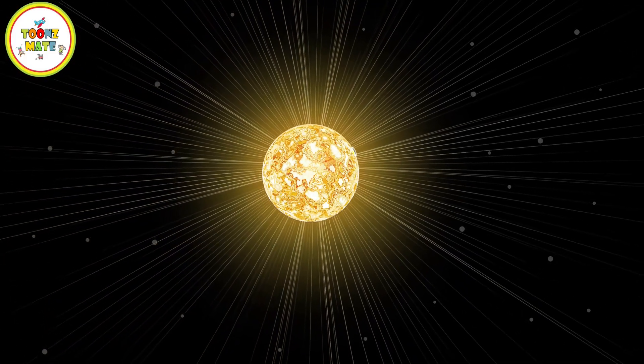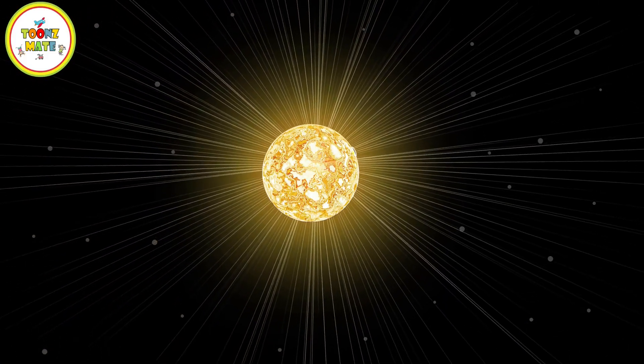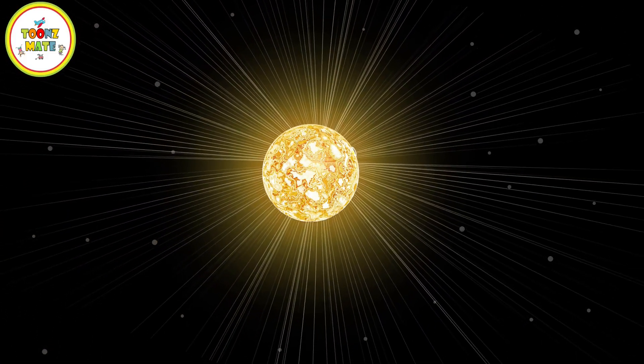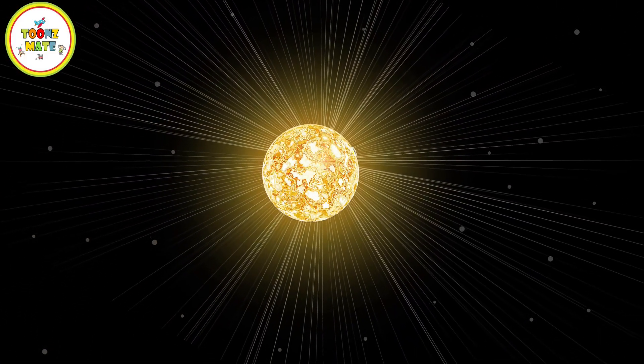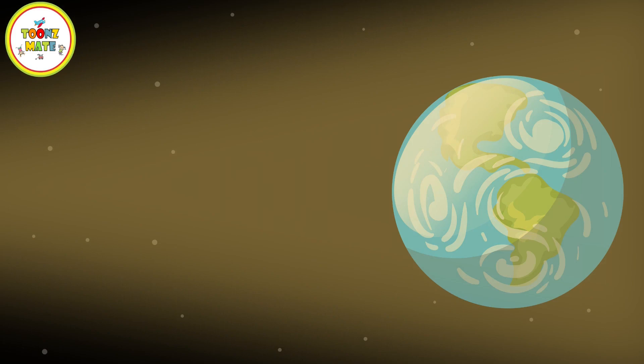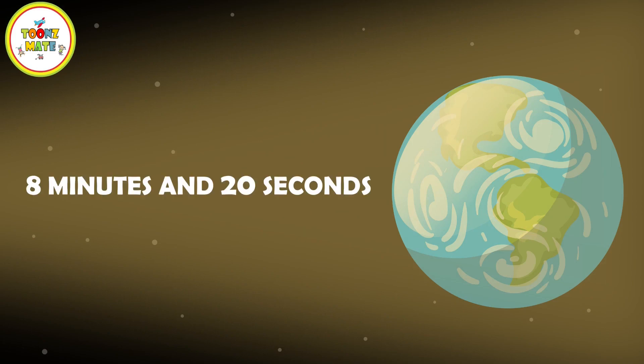The sunlight we see on Earth takes about 8 minutes and 20 seconds to travel from the Sun's surface to reach us. This means that we see the Sun as it appeared over 8 minutes ago.